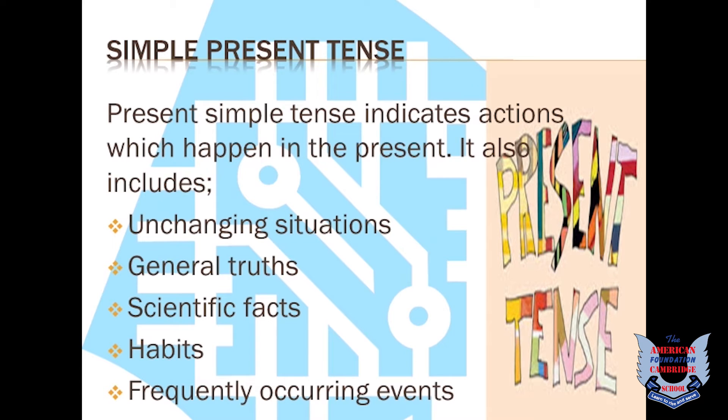First let's see what is simple present tense. It indicates actions which happen in the present. It includes unchanging situations, general truths, scientific facts, habits, and frequently occurring events.